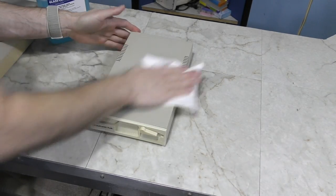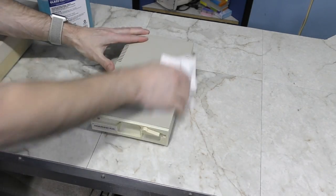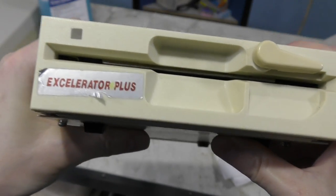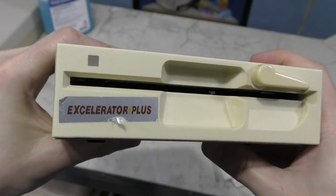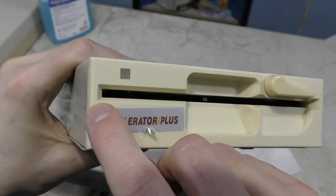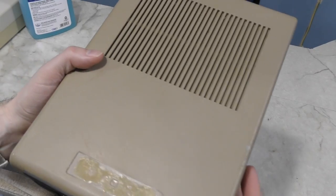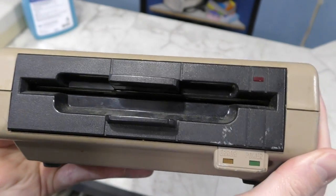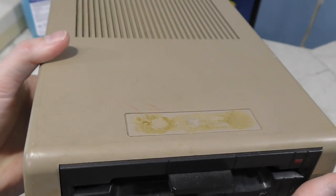While waiting on the retrobrite, let's move over to the Accelerator Plus. This one is in pretty good shape already. I think the front faceplate may need a little retrobrite, but the main concern is the condition and wacky placement of the badge. And here is the Enhancer 2000, the one I think will need the most work. It's a little bit grungy, so let's get that part cleaned up.